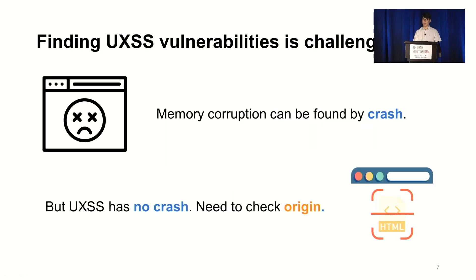Detecting this UXSS vulnerability is not easy. To highlight this problem, let's think about how we detect classic memory corruption. Detecting memory corruption is quite straightforward — you just need to observe a crash. However, UXSS vulnerability involves complex semantics and does not produce anything as easy to observe as a crash. So the question is: how do we check the semantic correctness behind the origin?